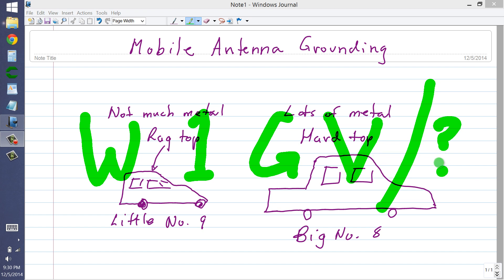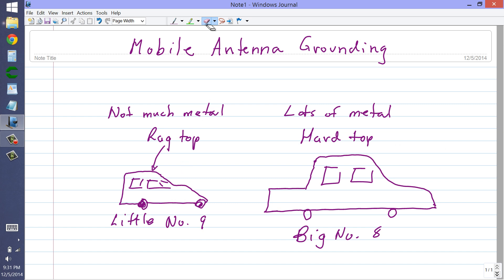with a little bit of a conundrum now, a little bit of a problem, in regards to grounding the mobile antenna. I just got rid of big number 8, for reasons which I have outlined in other videos, in favor of little number 9, which has probably got about one-fourth the metal mass that big number 8 had. That means it's got a substantially less effective antenna ground for unbalanced antennas.